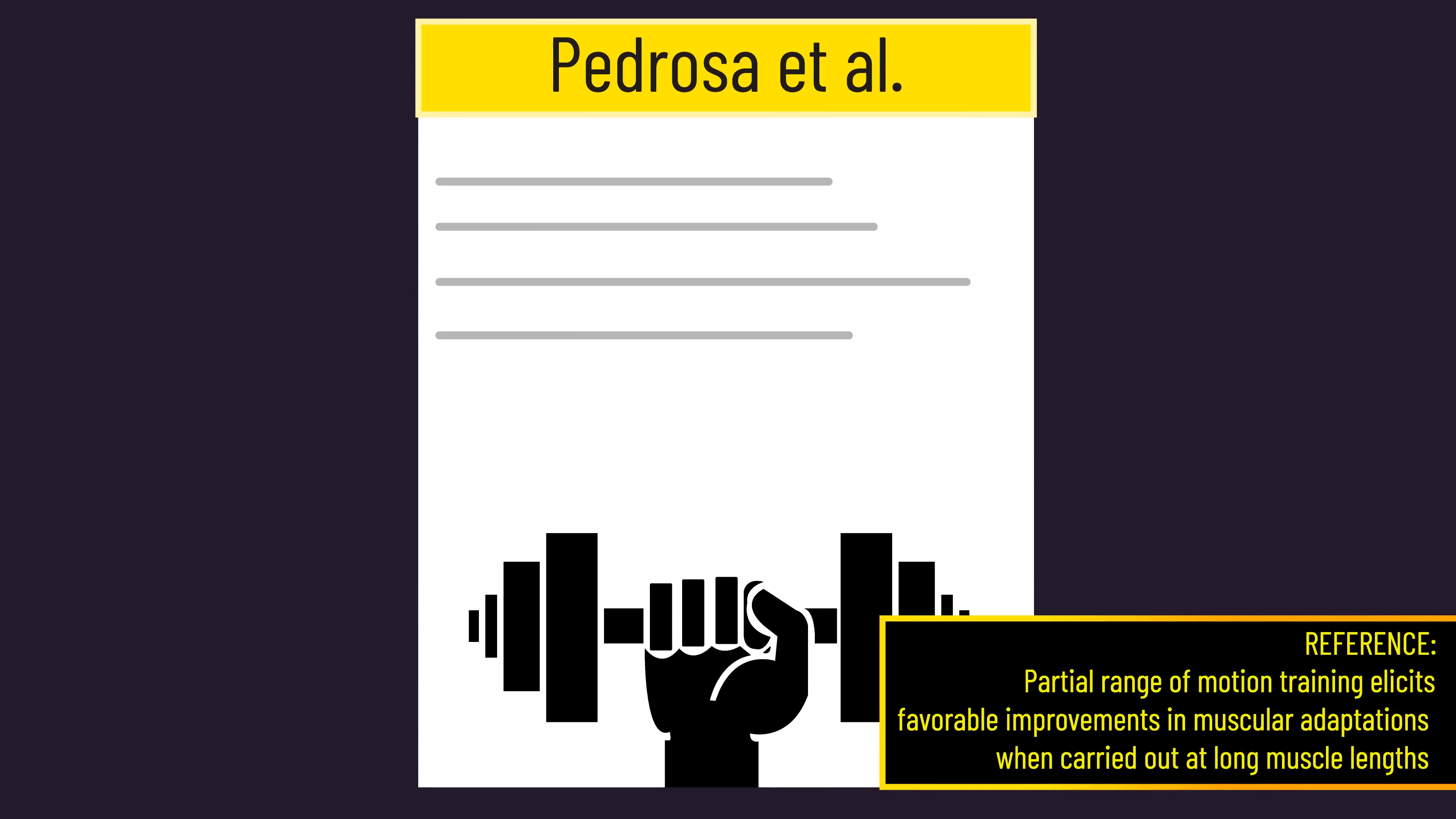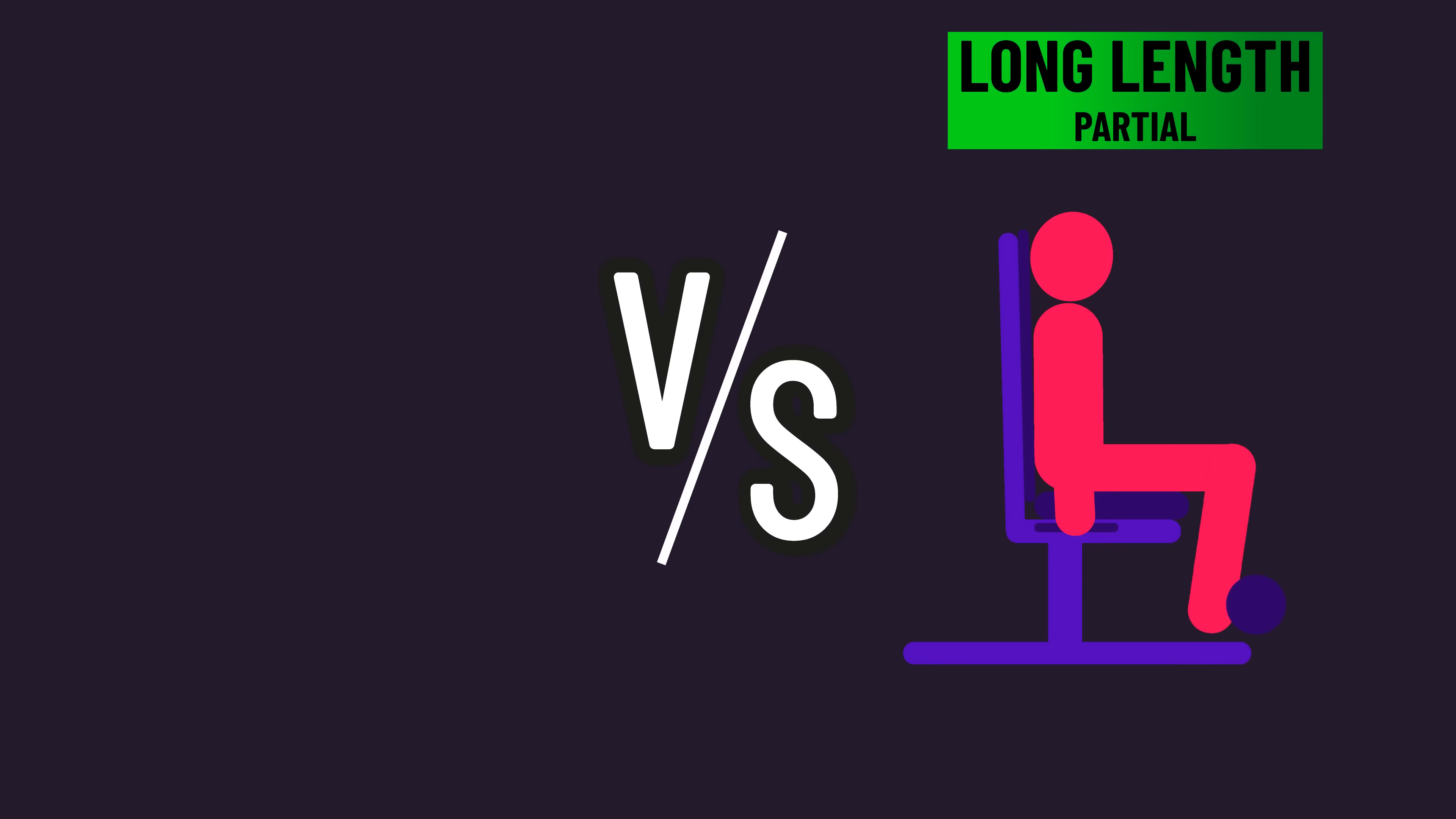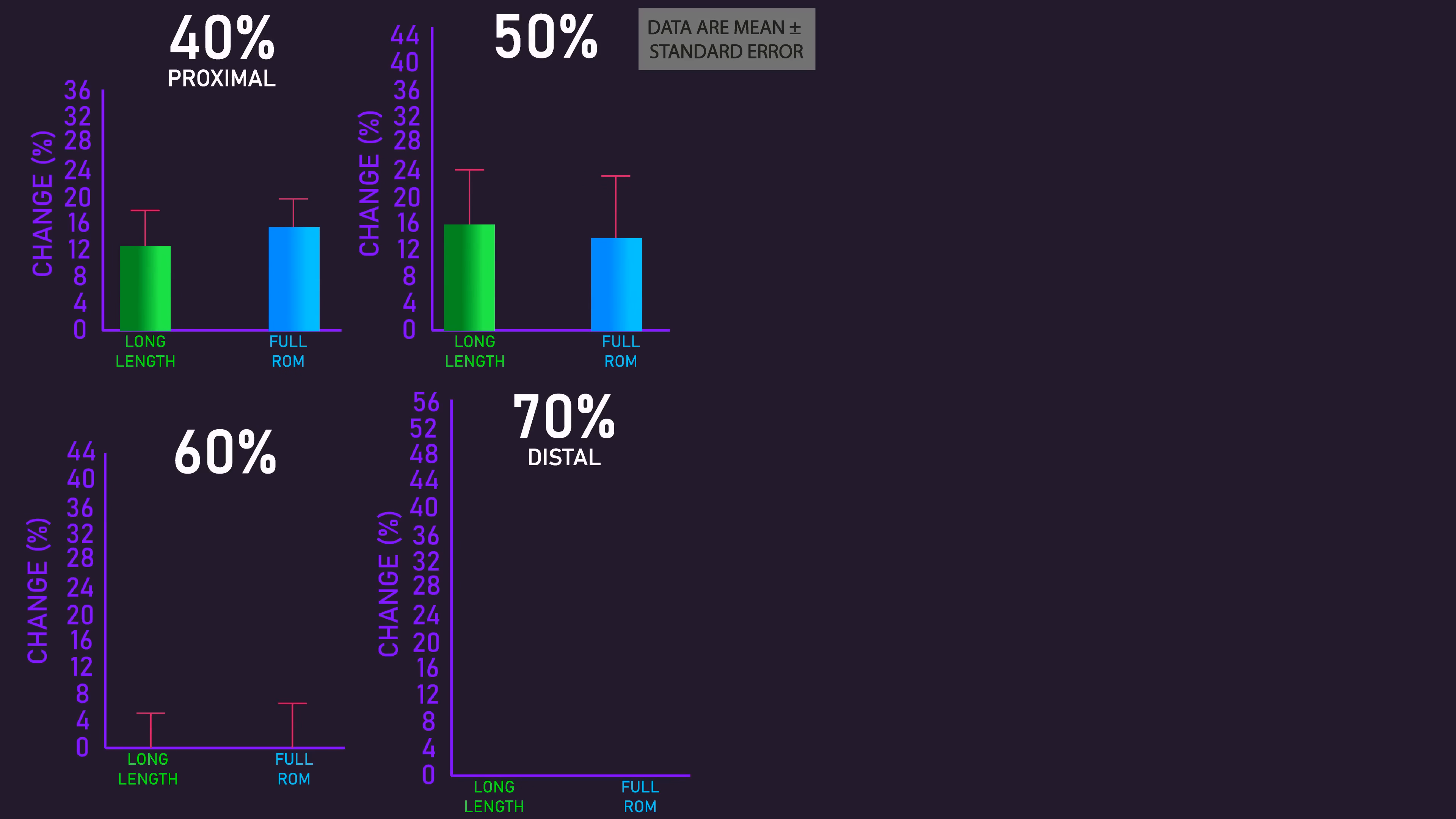Similarly, this paper on untrained individuals involves comparing leg extensions with a partial at long lengths to a full range of motion. Vastus lateralis growth tended to be similar at the 40 to 50 percent regions, but fairly better for the partials at long lengths at the 70 percent region.